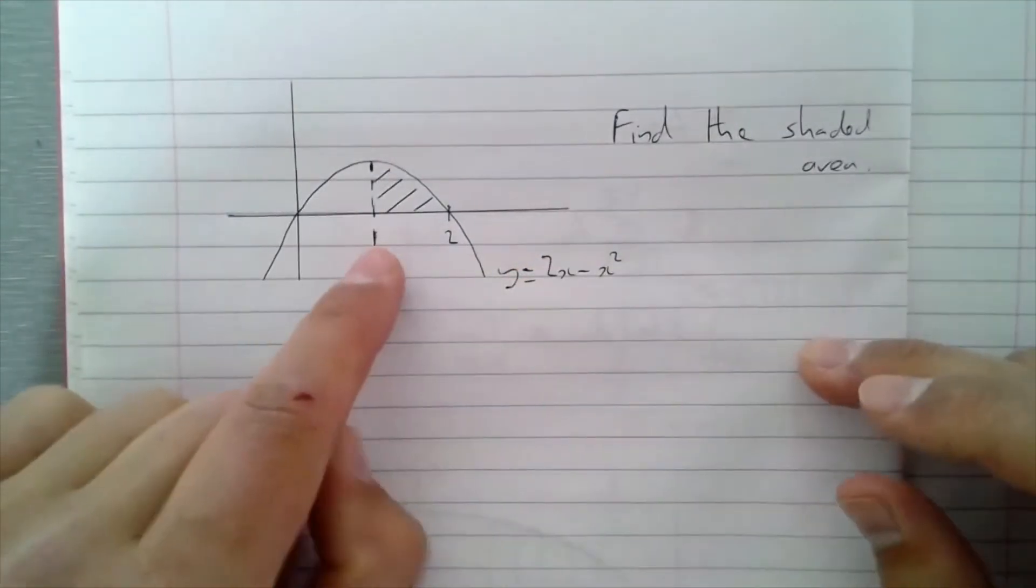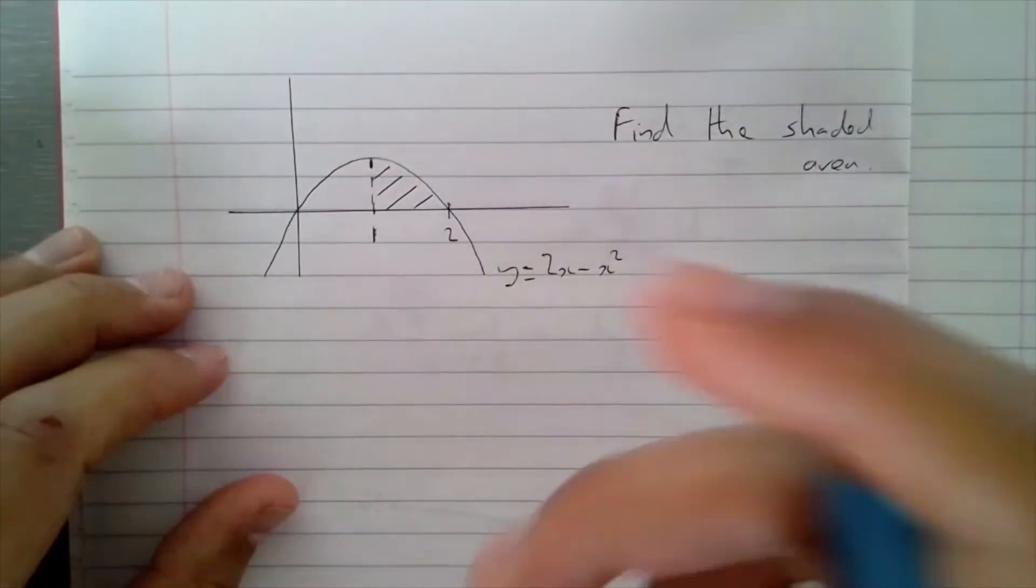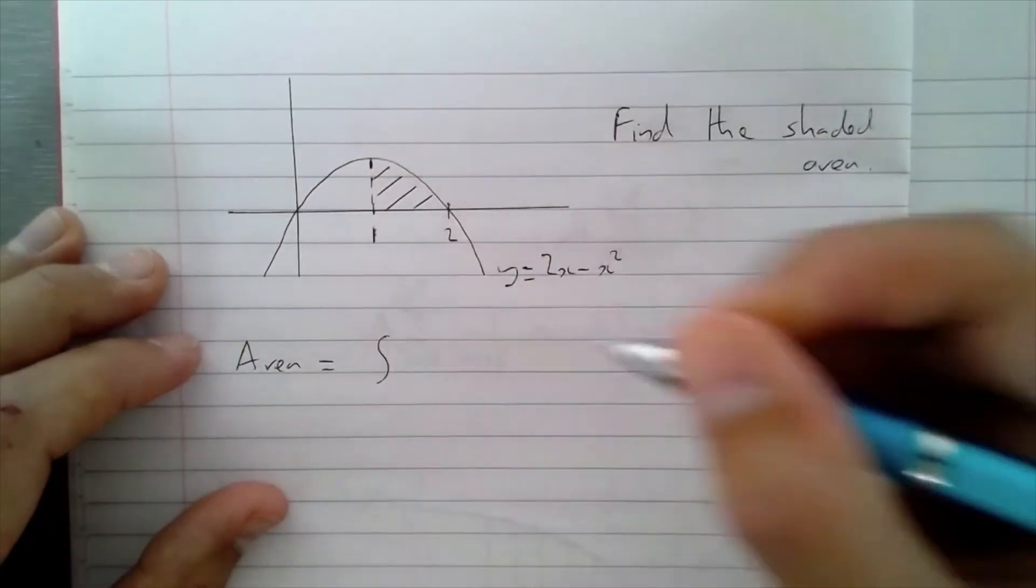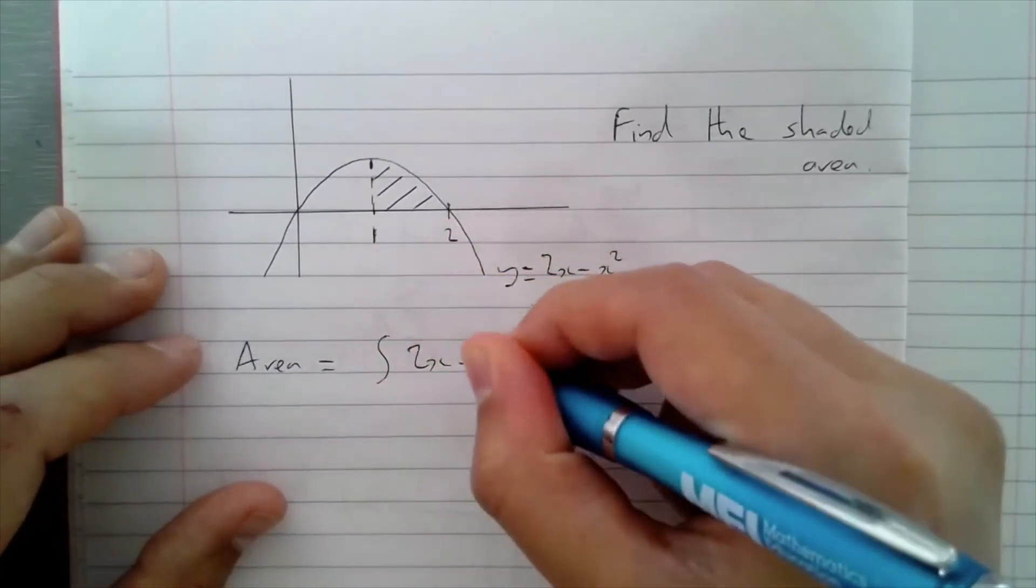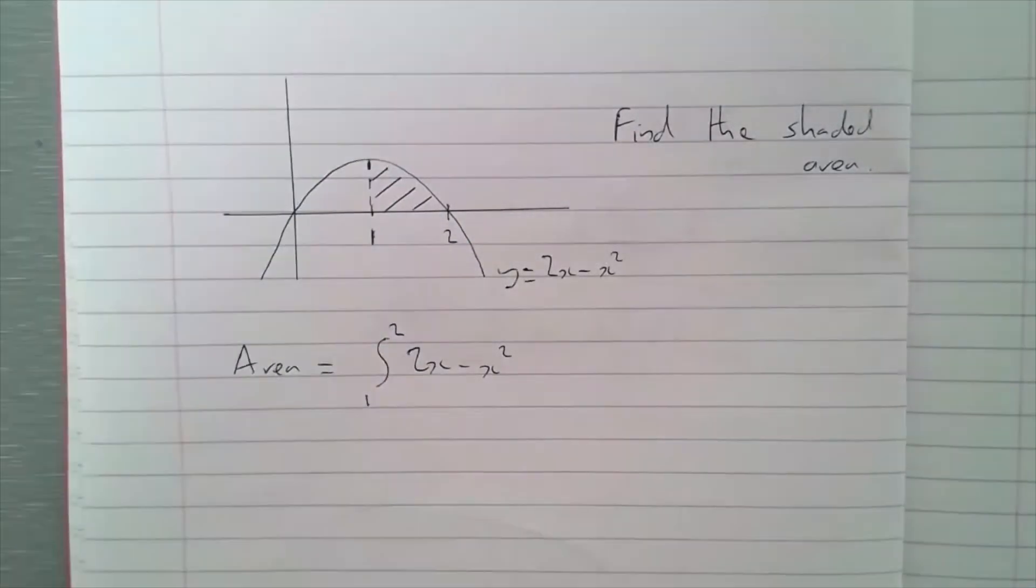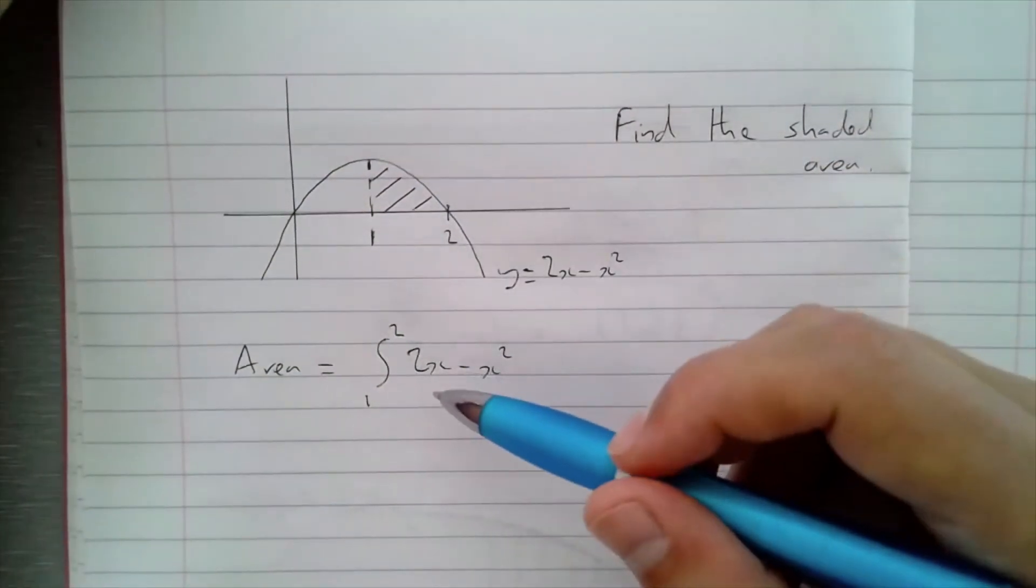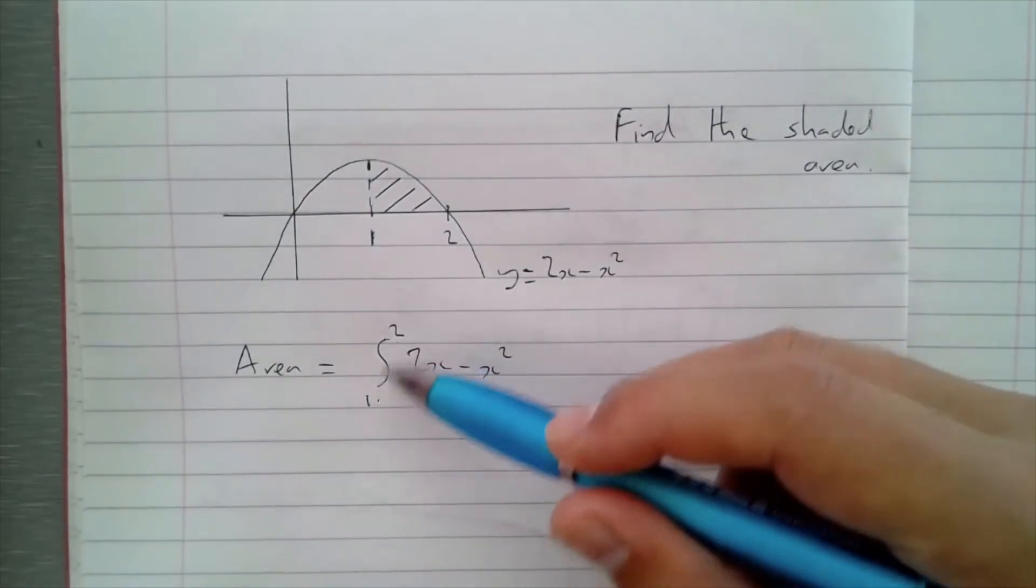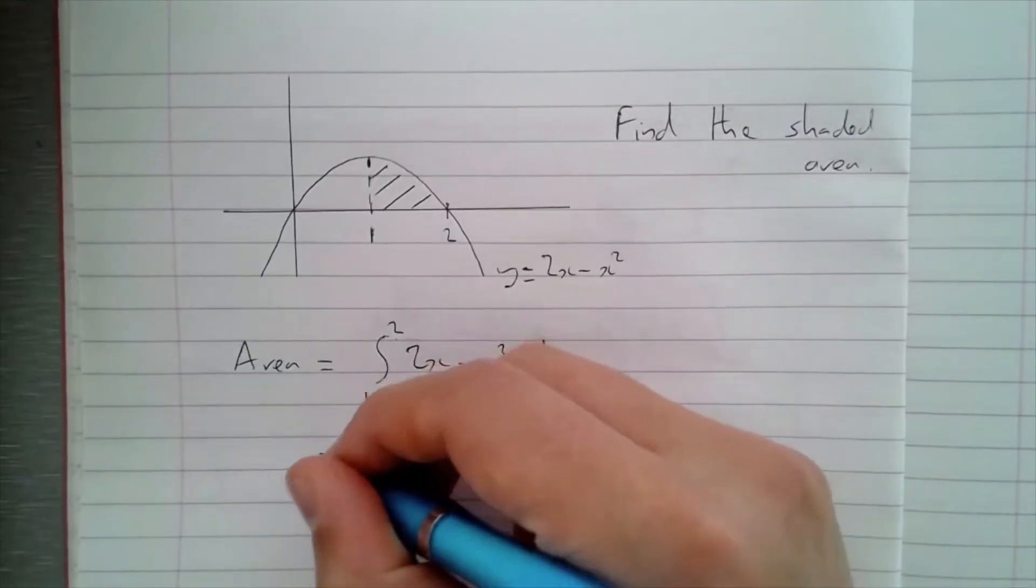What we can do is use integration to help us with this. We could use trapeziums - obviously that will give us an estimate - but we know that the integral gives us an exact area. So we know that area is equal to the integral of the curve, 2x minus x squared, between 1 and 2. These are known as the bounds of the integral. This is now a definite integral because it's definitely between these two things. If it hasn't got bounds on it, then it's called an indefinite integral.